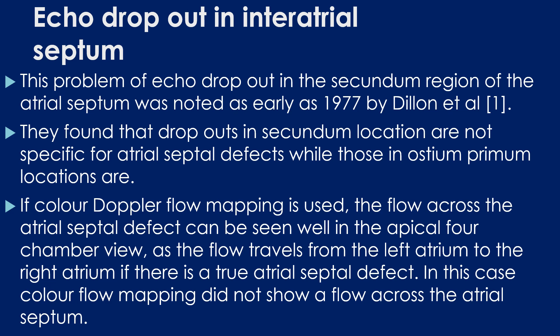If colour Doppler flow imaging is used, the flow across the atrial septal defect can be seen well in the apical 4-chamber view, as the flow travels from the left atrium to the right atrium if there is a true atrial septal defect. In this case, colour flow mapping did not show a flow across the atrial septum.